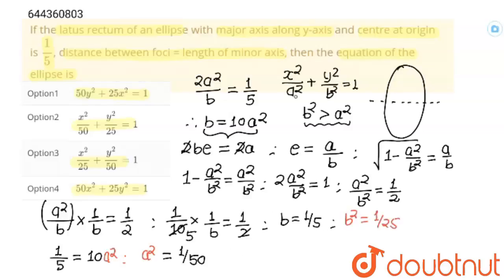Now we can substitute both values into the equation. With a² = 1/50, the denominator 50 goes to the numerator giving 50x². With b² = 1/25, the 25 goes to the numerator giving 25y² = 1. Therefore the equation is 50x² + 25y² = 1, and option 4 is correct. Thank you, students.